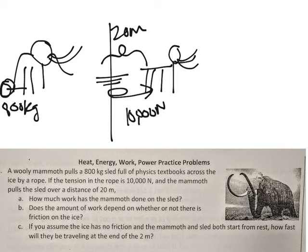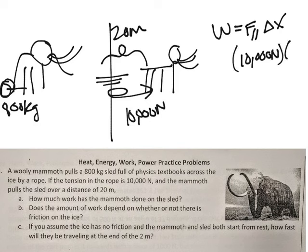So inside this rope there's a tension of 10,000 newtons. So he's pulling it with 10,000 newtons. And the distance it goes is 20 meters. So for work, if you remember, work is equal to the force parallel times the change in distance. So the force he's pulling it with is 10,000 newtons, and it's going over 20 meters, so you multiply them. So as long as my mental math is correct, that's 200,000 joules of work.